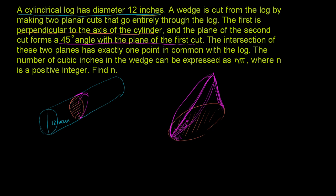This problem is ridiculously easy if you see the trick: instead of directly solving for the volume of the wedge, take another one of these wedges, flip it over, and put it on top. If you take two wedges and stack them — flipping one and placing it on top of the other — what do you get? It's just a cylinder now. So two wedges in this configuration form a cylinder with a diameter of 12.